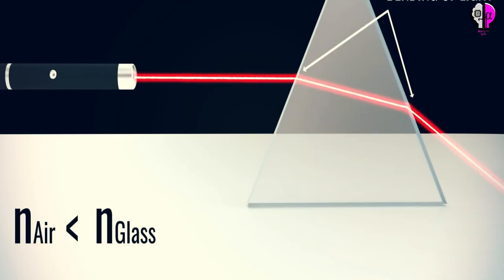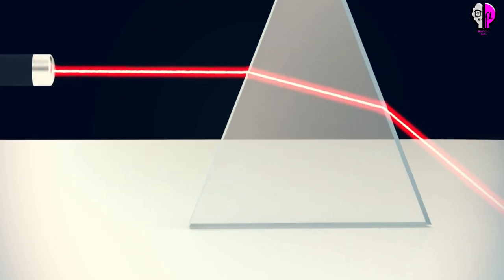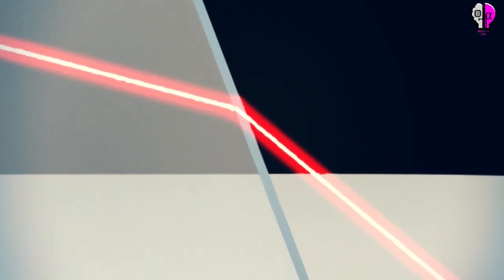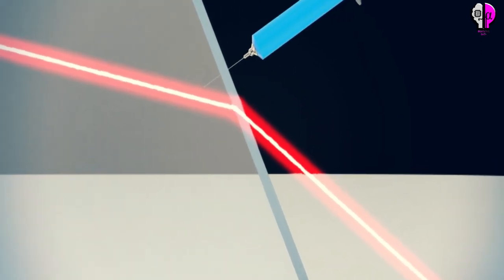Light travels down a fiber optic cable by bouncing repeatedly off the walls. Each tiny photon bounces down the pipe like a bobsleigh going down an ice run. Now you might expect a beam of light traveling in a clear glass pipe simply to leak out of the edges.